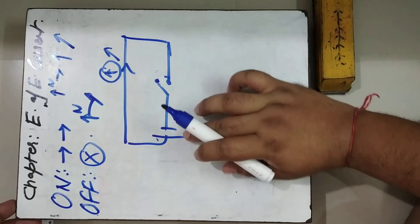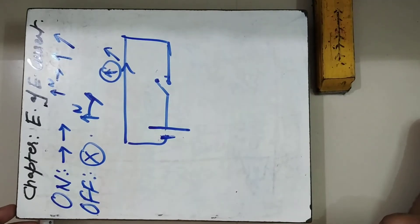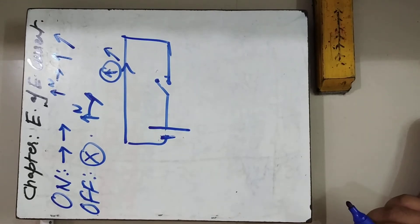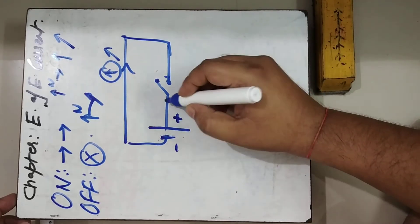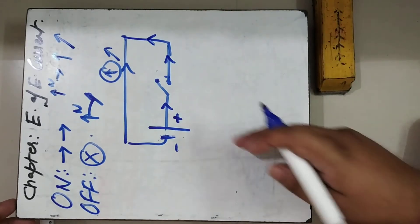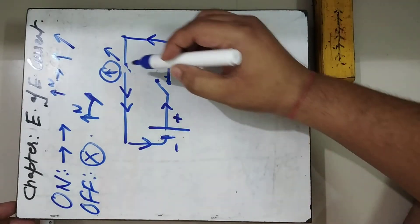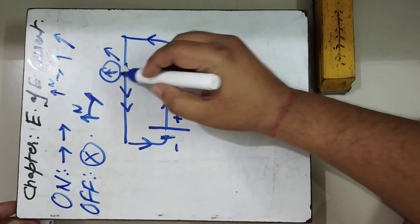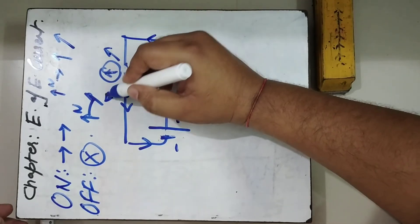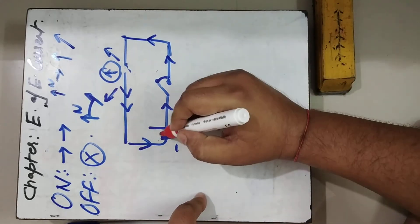Now, in the second part of the experiment, we change the polarity of the battery. Current technically flows from negative to positive terminal as electrons, but conventionally we say current flows from positive to minus. So when we reverse the battery, the direction of current reverses. The current direction changes, and accordingly the deflection of the magnetic needle also occurs in the opposite direction.